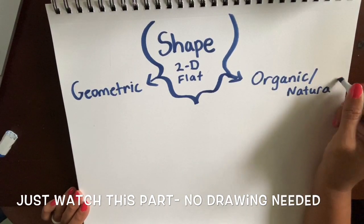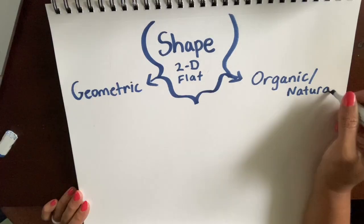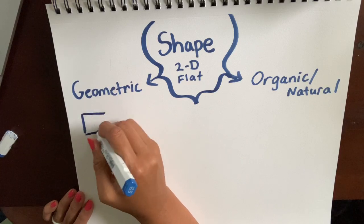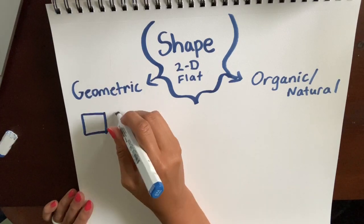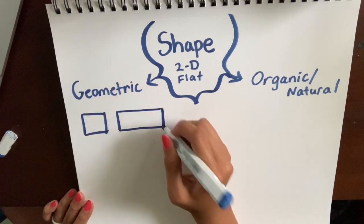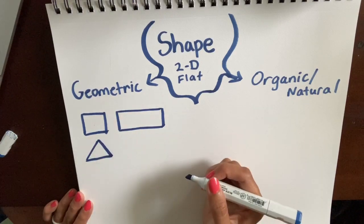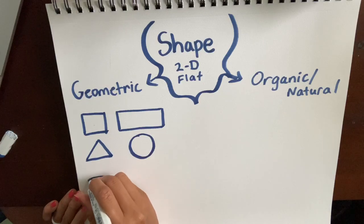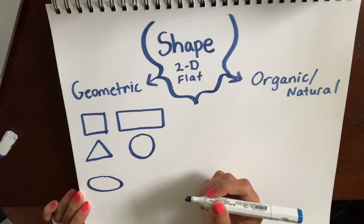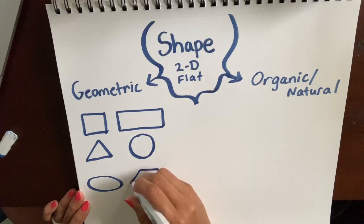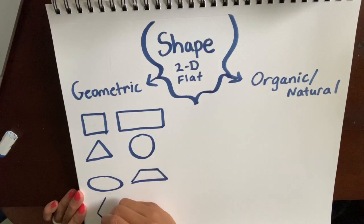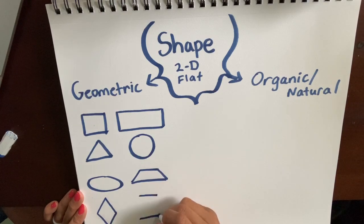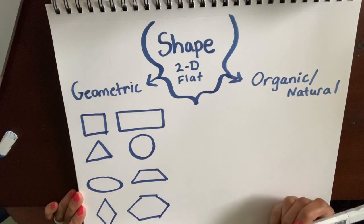Let's start with geometric shapes. I like to think of them as the shapes that have names and rules. Squares have four even sides, rectangles have four sides as well, triangles have three sides, circles are a round even shape. We have an oval, a trapezoid, a diamond shape or rhombus, and a hexagon. Geometric shapes follow rules and their names depend on how many sides they have and whether they're curved or straight.